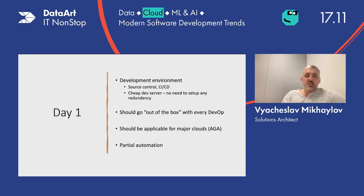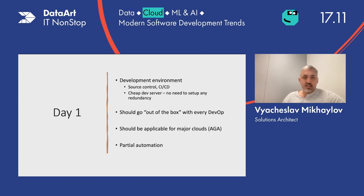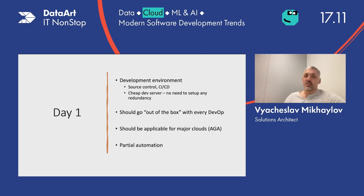It should work for all major clouds — Azure, Google, and Amazon. And on day one there should be automation. Automation is a key thing. Without automation, one should not even try to do microservices or more granular architectures, because deploying everything manually will be painful. So day one, DevOps, alongside developers, should start doing automation for everything on the platform.